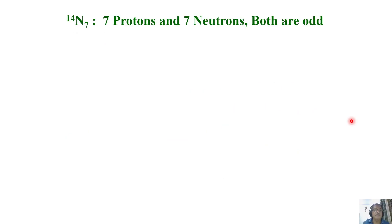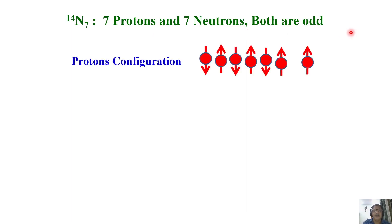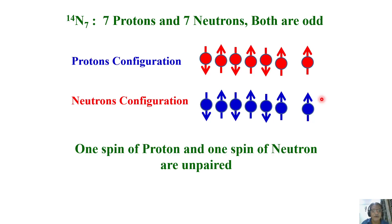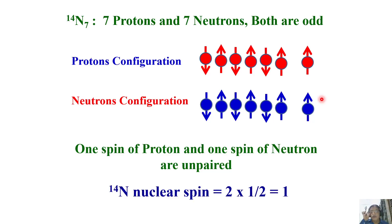Nitrogen-14: seven protons and seven neutrons, both odd numbers. The proton configuration: six are paired, only one proton is unpaired. Similarly for neutrons: six are paired, one is unpaired. So there is one unpaired proton and one unpaired neutron in the nucleus. Taking these two together, the total spin of Nitrogen-14 is one.